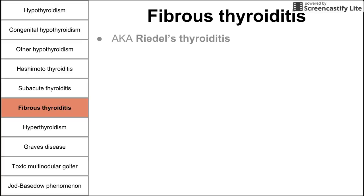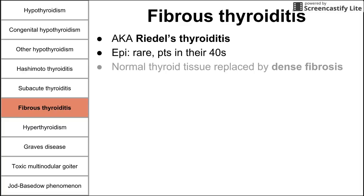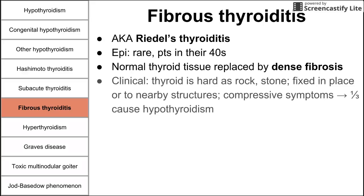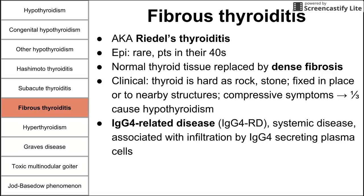Next is fibrous thyroiditis, also called Riedel's thyroiditis — a rarer condition typically in patients in their 30s or older. Normal thyroid tissue is replaced by dense fibrosis, making the thyroid as hard as a rock or stone, fixed to nearby structures, sometimes causing compressive symptoms. About a third of cases cause hypothyroidism. This is an IgG4-related disease, associated with infiltration by IgG4-secreting plasma cells.